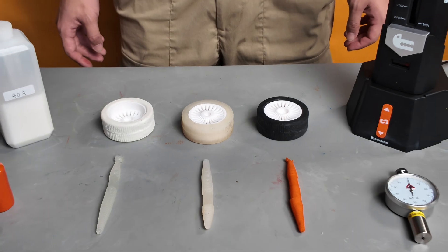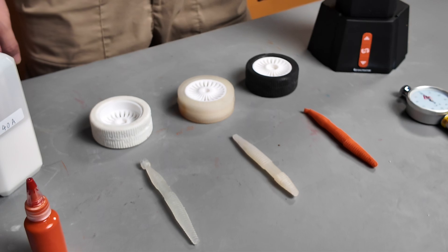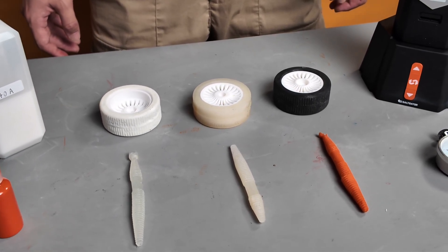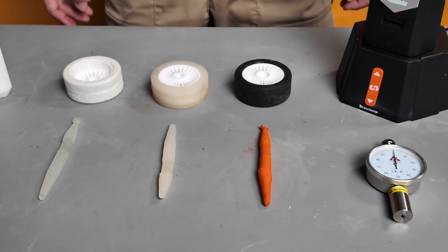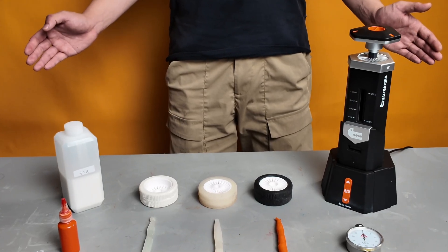In short, 40A balances softness and support, great for treaded tires and for lures that need clean action and durability. Which hardness or build should we try next? Tell us in the comments. This is Salt Gator. See you next time.